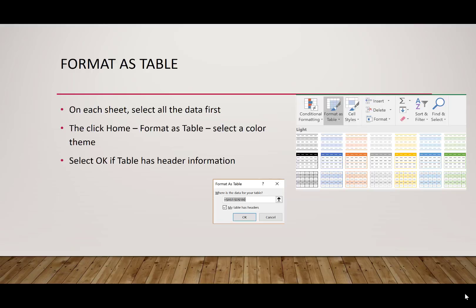You will get a message that says 'Where is the data for your table?' — that's the area you selected. Make sure it shows the right information. Below there is a checkbox that says 'My table has headers.' The headers are the items across the top along the columns, like sale number, first name, last name, and so forth. With these labels, it will make them the headers of our table. If you uncheck this, it will add an additional row that says Column 1, Column 2, Column 3 — and we don't want that. We want to use the headers we have, so make sure that is selected and hit OK.